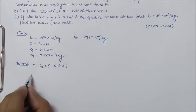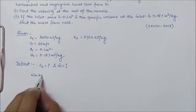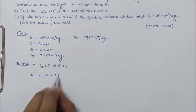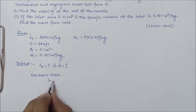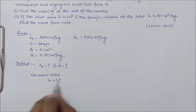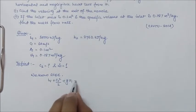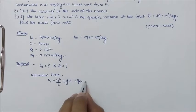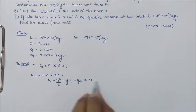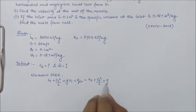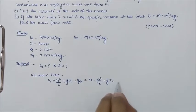So, we know SFEE as H1 plus C1 square by 2 plus GZ1 plus QCV is equal to H2 plus C2 square by 2 plus GZ2 plus WCV.